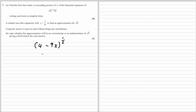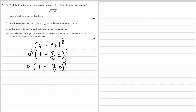To make the number at the front a 1, we need to take it outside — we need to factorize it. So we're going to take 4 outside the bracket: 4 to the power of a half, and inside we'll have (1 - 9/4 x) to the power of a half. Expanding the bracket returns us to (4 - 9x)^(1/2). Four to the power of a half is 2, so we have 2(1 - 9/4 x)^(1/2).